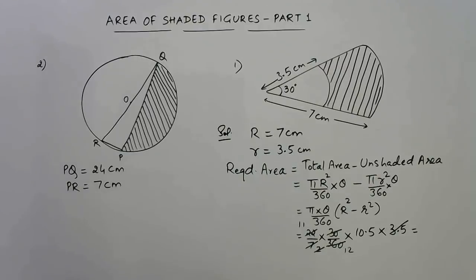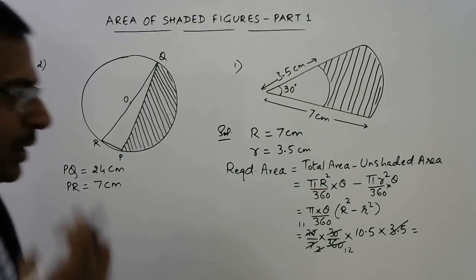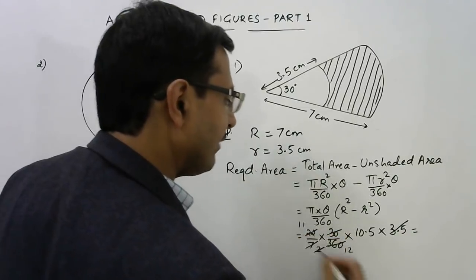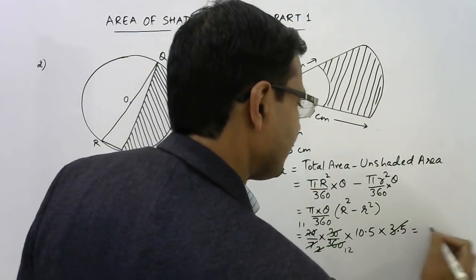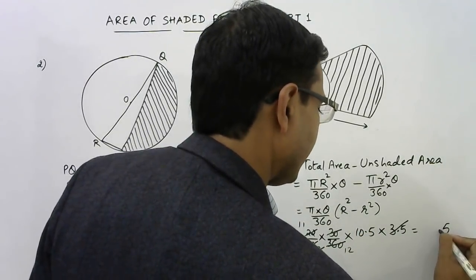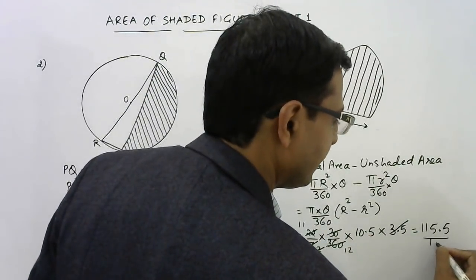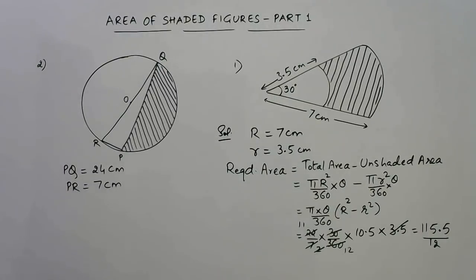Now this is 11 × 10.5 ÷ 12, that is the only thing we are left with in this problem. So how do you multiply 10.5 by 11?